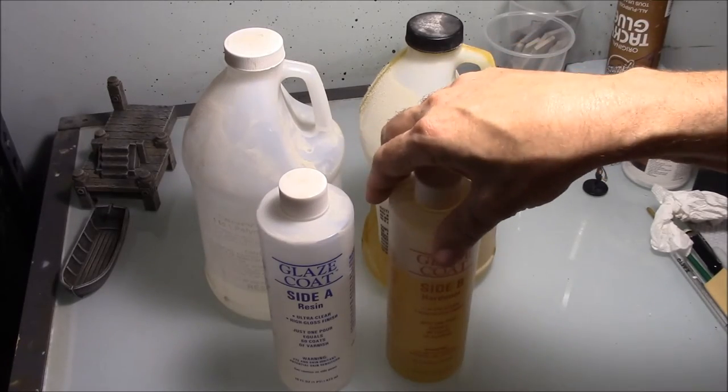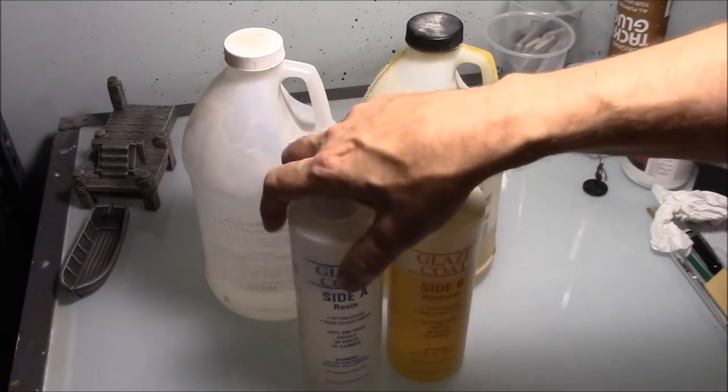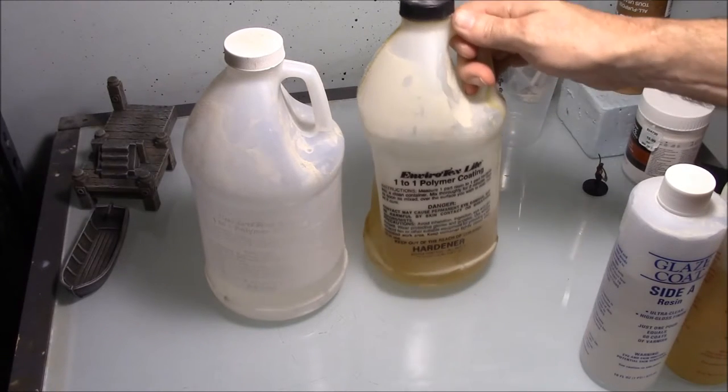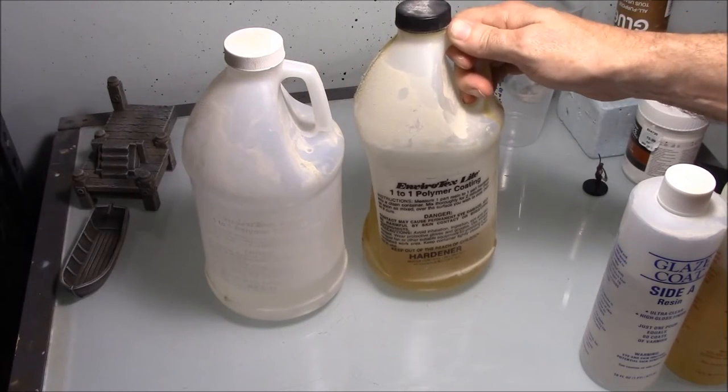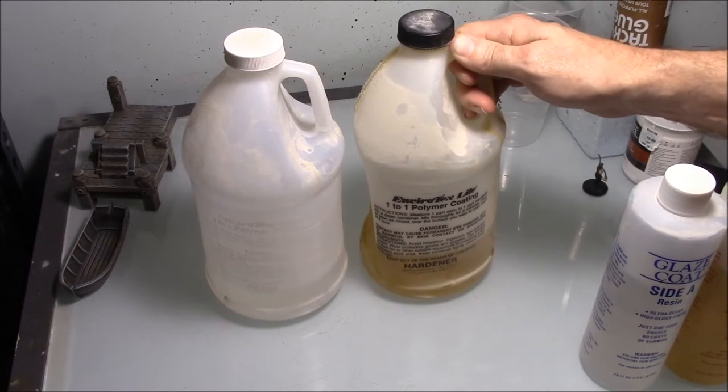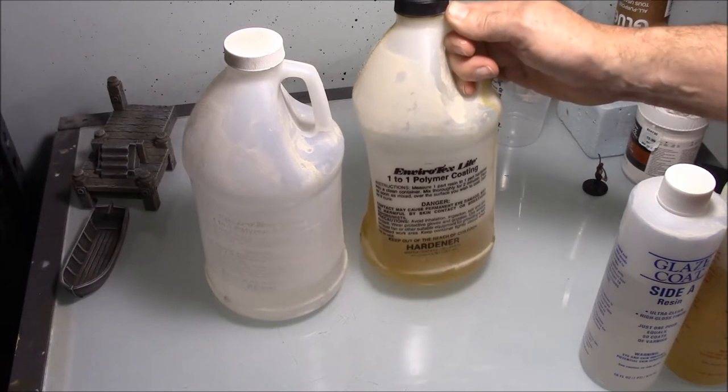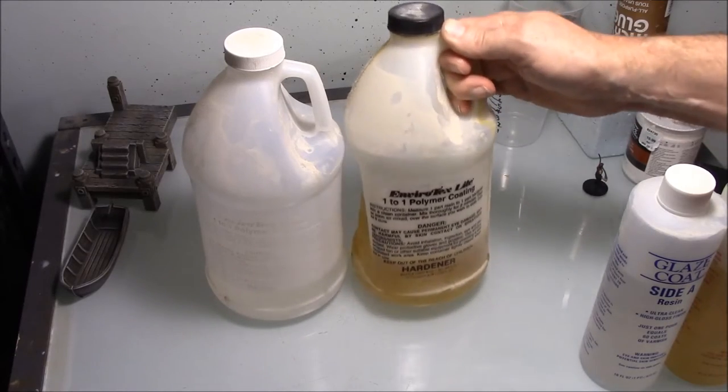If you want to find this, the best way to do it is just go to your local lumber yard and ask them in the paint department for something that you can pour onto a table top to make it look like there's 50 coats of varnish. And they will take you in the paint department and in their varnishes they will have something like this.